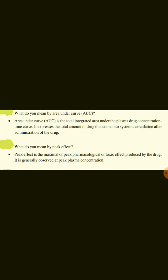What do you mean by AUC, i.e., area under the curve? AUC is the total integrated area under the plasma drug concentration-time curve. It expresses the total amount of drug that comes into systemic circulation after administration of the drug.